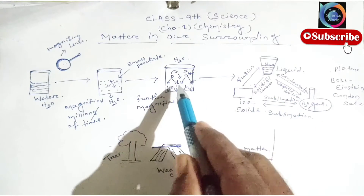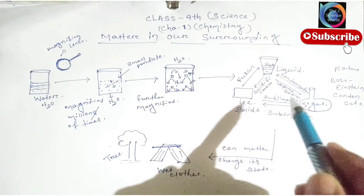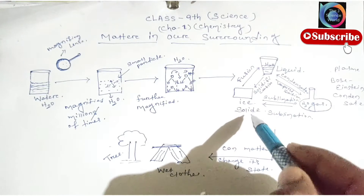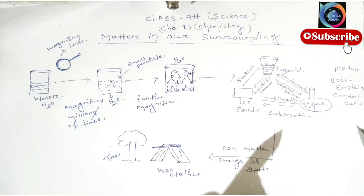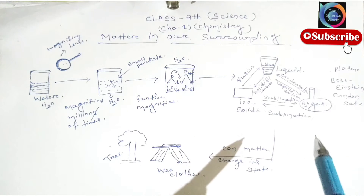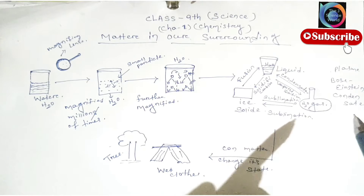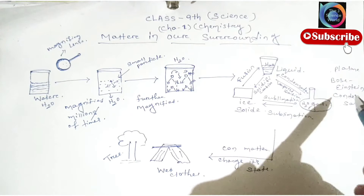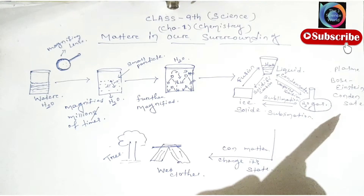We find that water has three different phases: one is liquid phase, second one is solid phase, and third one is gaseous phase. Except these phases, there are two more states of water possible — one is plasma state and second one is Bose-Einstein condensation state.